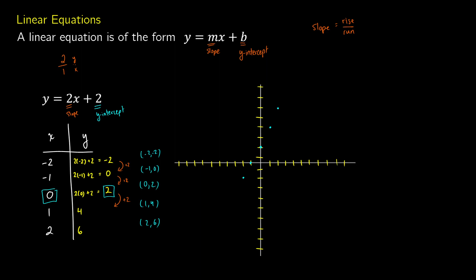If we take a line tool, we should be able to connect all of these points. There we go — this would be our line. From point to point you can see the slope: the line is going up 2 for every 1 over. And here we have where we're crossing the y-axis, which is what we call our y-intercept.